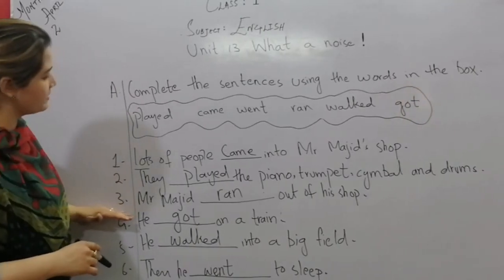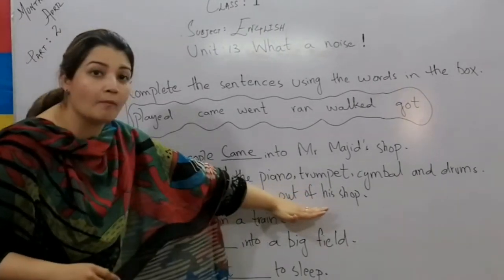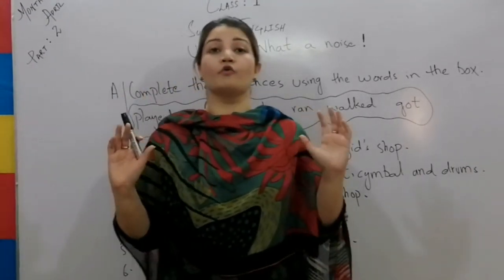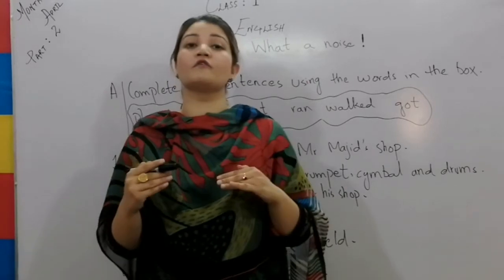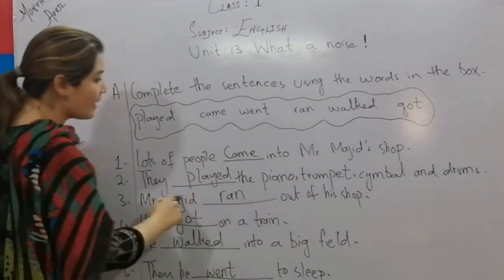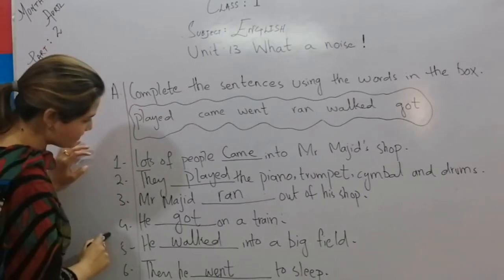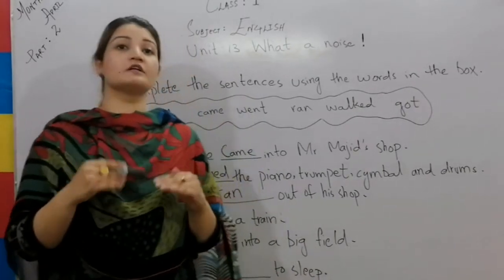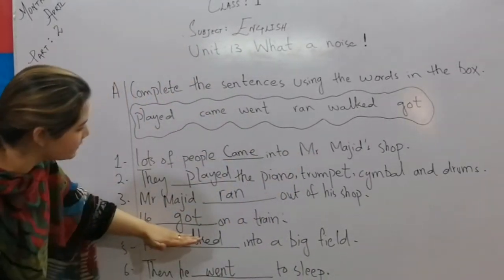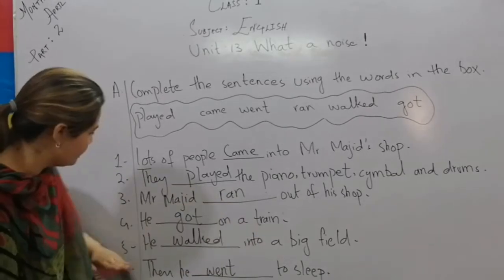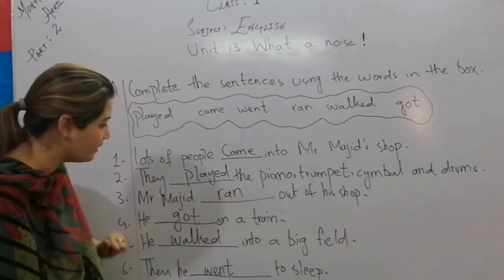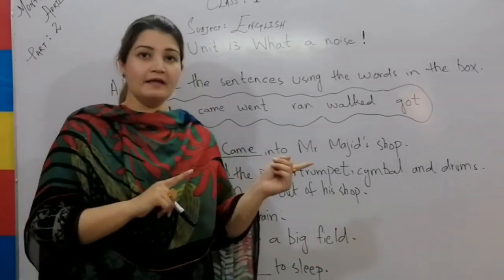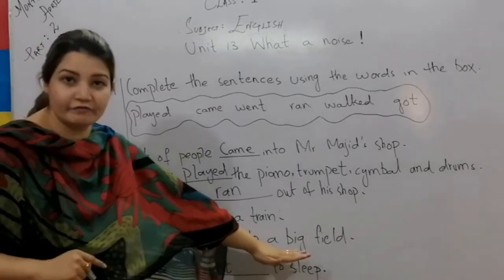The third sentence: 'Mr. Majid ___ out of his shop.' Mr. Majid got so exhausted by the noise of the musical instruments, so he ran out of his shop. The next sentence: 'He ___ on a train.' When he left his shop, he directly got on a train and went somewhere. So the answer is: He got on a train.